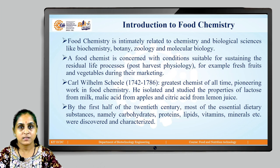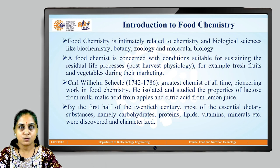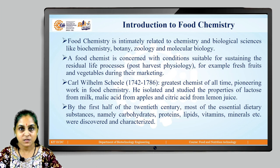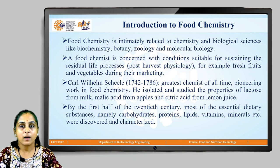Let us quickly look at the history of food chemistry. A scientist known as Karl Wilhelm Scheele, within the years 1742 to 1786, did some of the greatest work — he isolated and studied various properties of lactose from milk, malic acid from apples, and citric acid from lemon juice. He was one of the greatest chemists of all time and his pioneering work was in food chemistry. By the first half of the 20th century, most of the essential dietary substances like proteins, lipids, vitamins, minerals, and carbohydrates — mostly all the macro and micronutrients — were discovered and characterized.